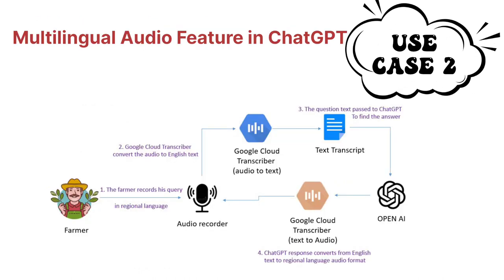In our second use case, we'll be building something exciting. Why always search in ChatGPT using text? Why not do something with audio — in different languages? Here, ChatGPT can be queried in different languages in audio format. We'll use a Google Transcriber to convert audio to meaningful text, then the query will be searched using the ChatGPT API and the solution returned in audio format.